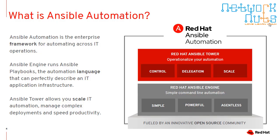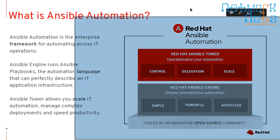Ansible is basically used for automation. It is used for a lot of things apart from just configuring Linux boxes — it can be used to configure routers, switches, and much more. Ansible automation is an enterprise framework, currently a product of Red Hat. There are two main components: the Ansible controller, where we write the code, and the nodes — the remote servers. We work on the controller and push things onto the remote servers.